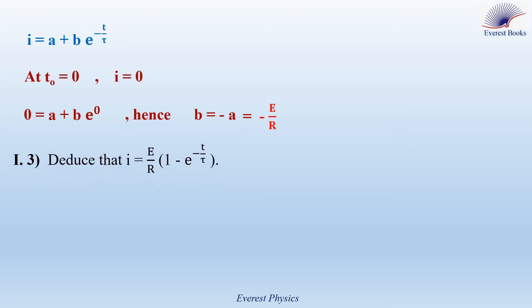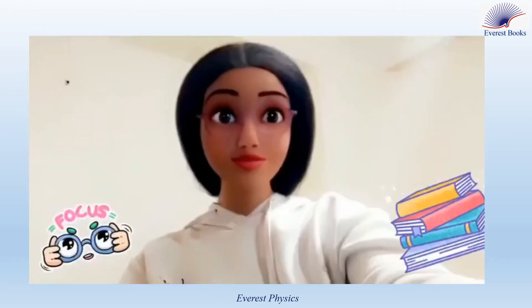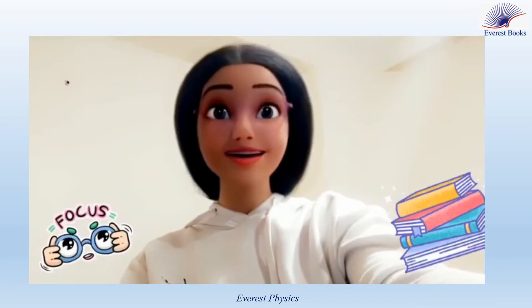Part I3: deduce that I equals E over R into 1 minus exponential minus T over tau. Replacing A by E over R and B by minus E over R, I becomes E over R minus E over R times exponential minus T over tau. Taking E over R as a common factor gives I equals E over R into 1 minus exponential minus T over tau. Focus — this is important.